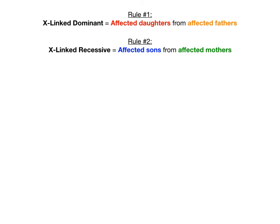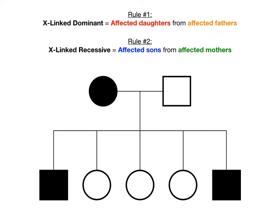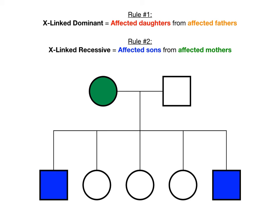Now let's try example two. The pedigree shows affected sons coming from an affected mother — the colored-in circle at the top — who gives rise to two affected sons, both colored in, but three daughters that are not affected. Because it's the sons affected and it's coming from the affected mother, this is rule number two — it has to be X-linked recessive.